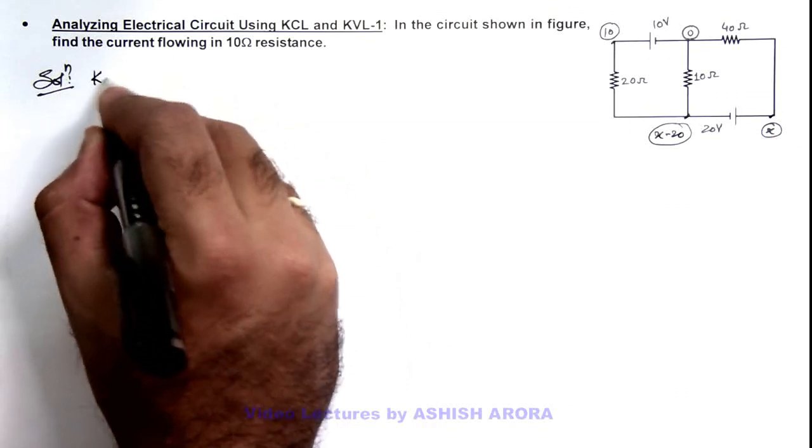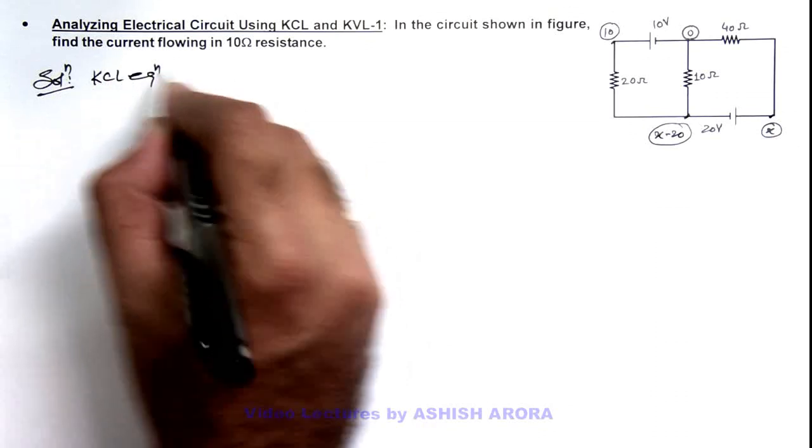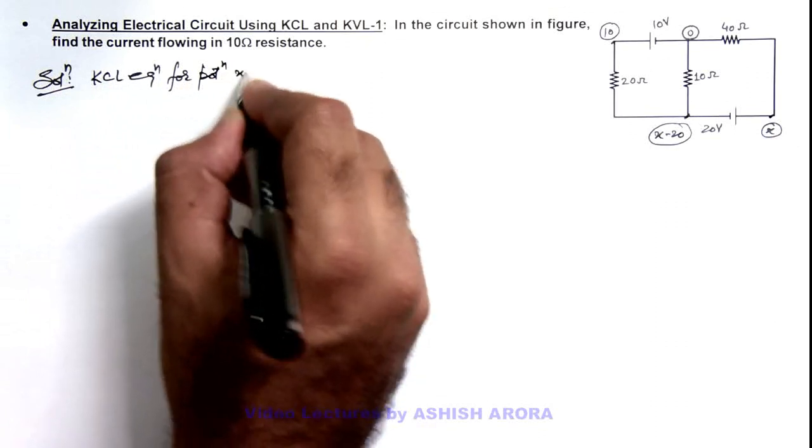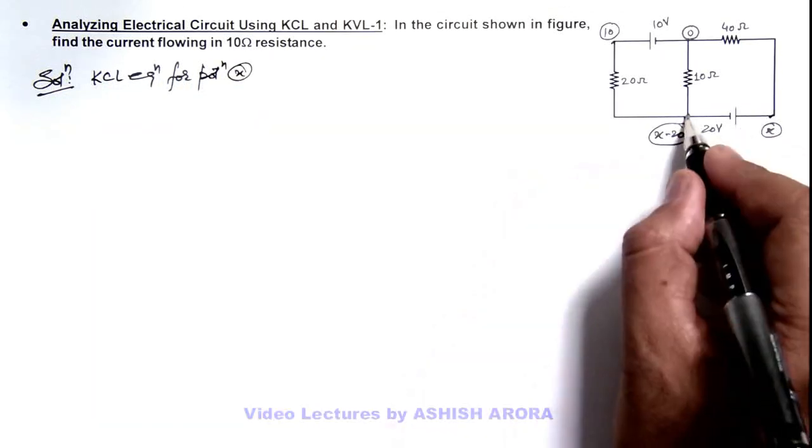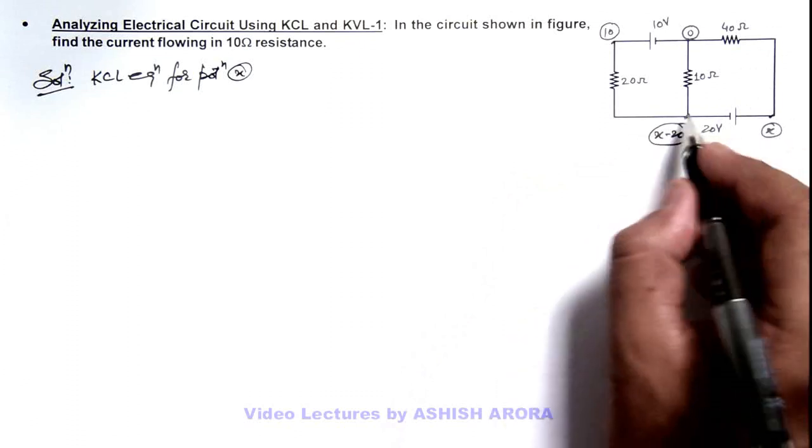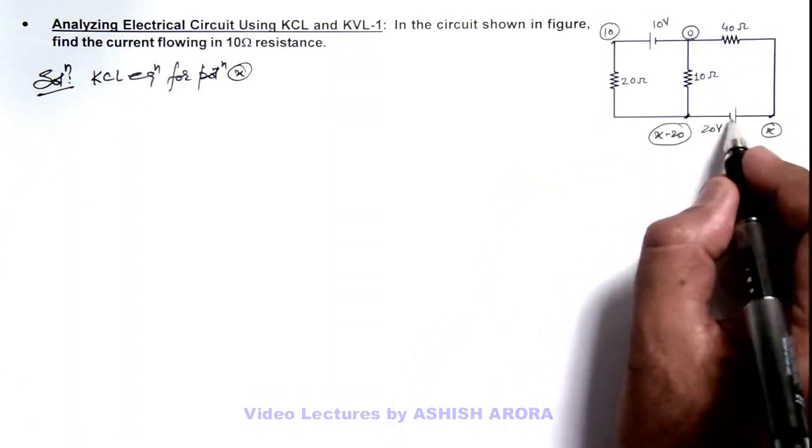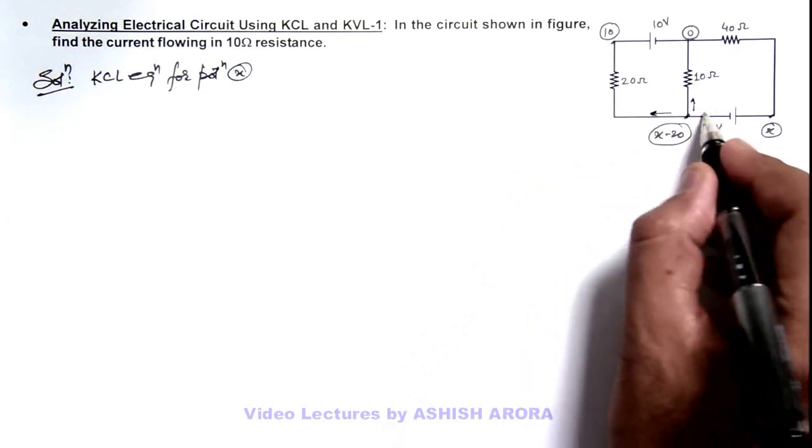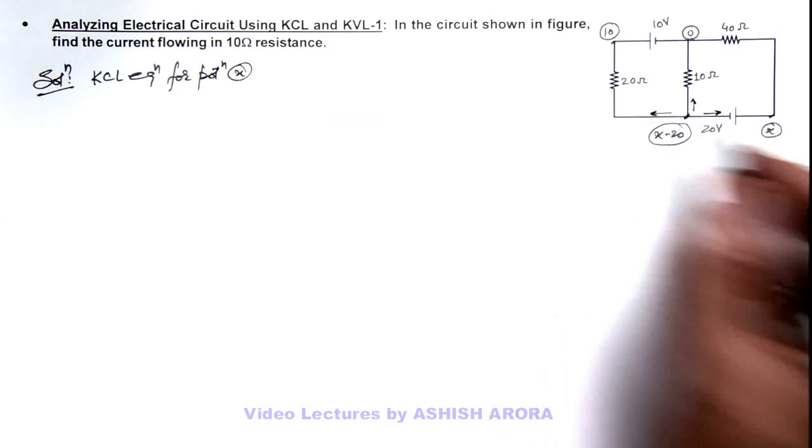We can write KCL equation for potential x. So if we talk about this junction where a variable potential exists, in this junction there are three wires which are connected. So we can say the sum of outgoing currents from this junction should be equal to zero.